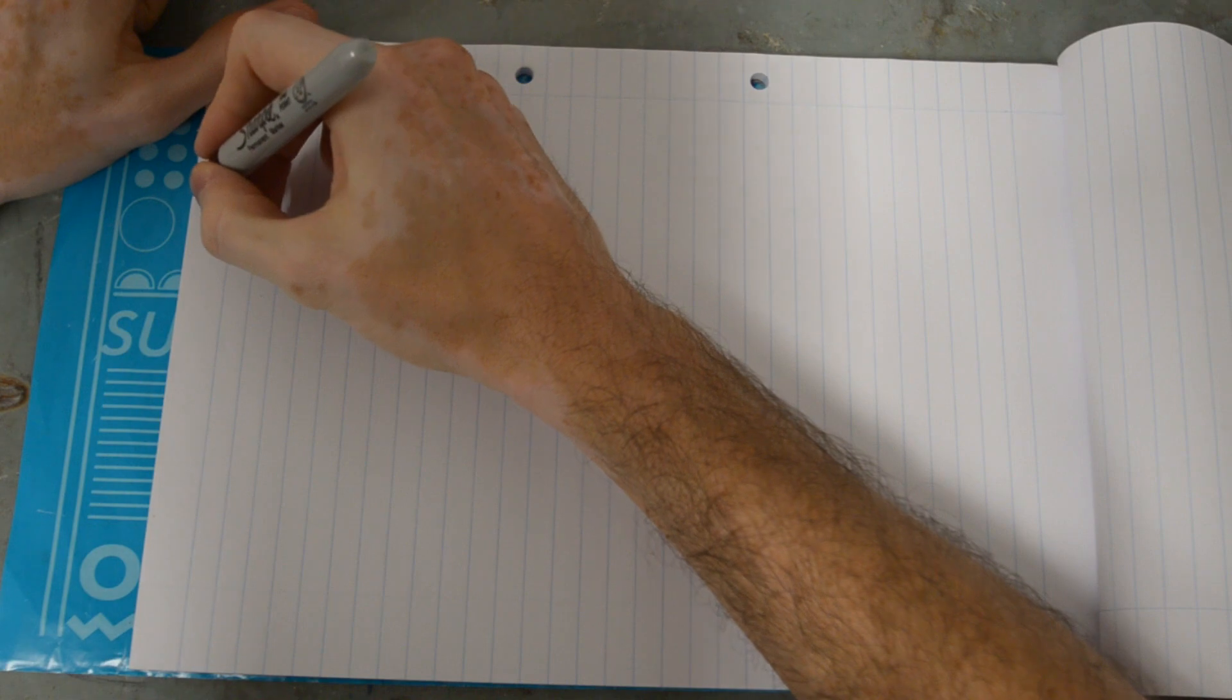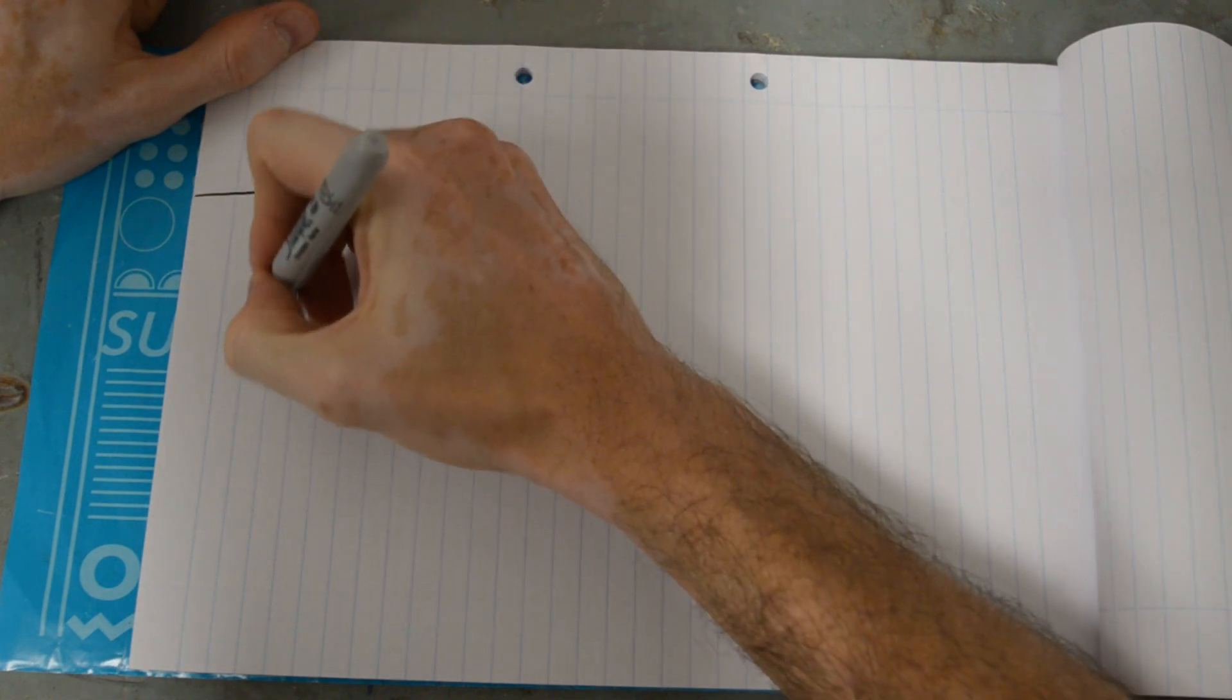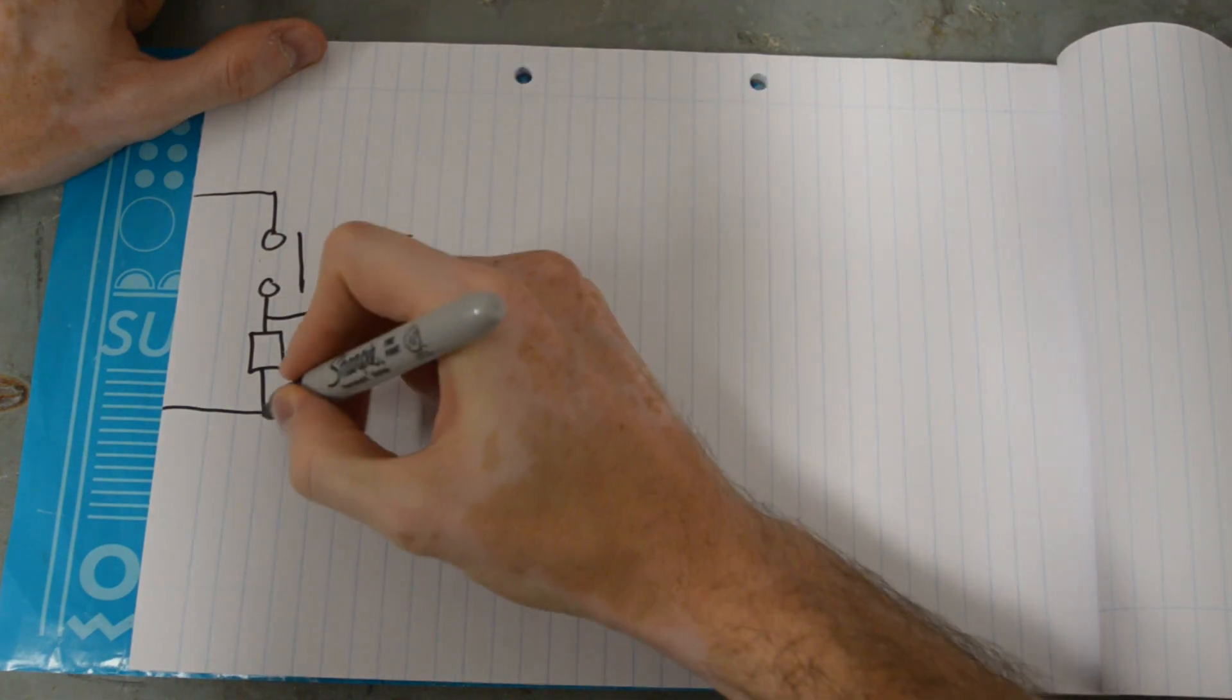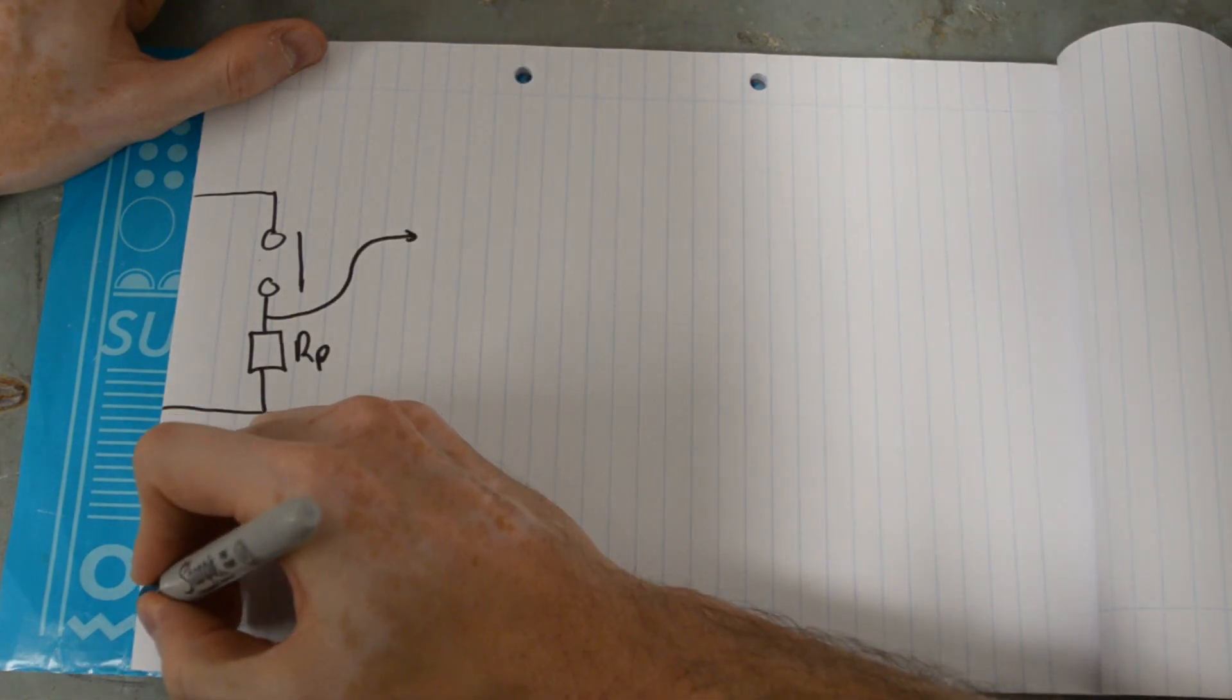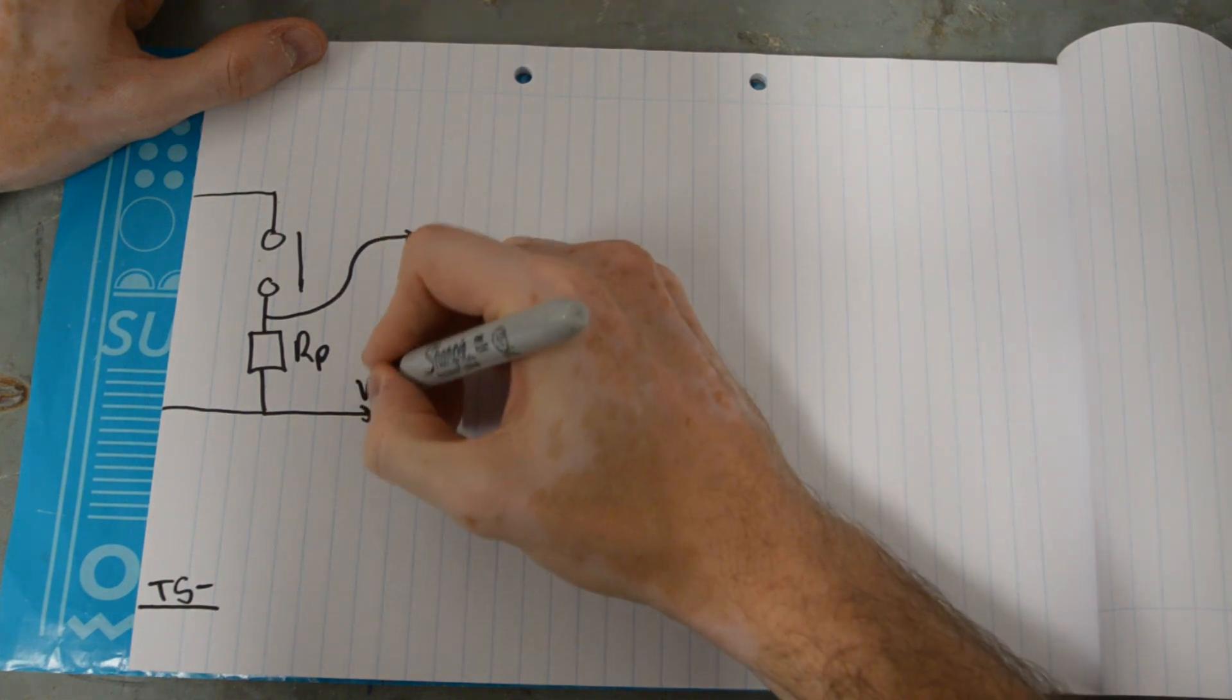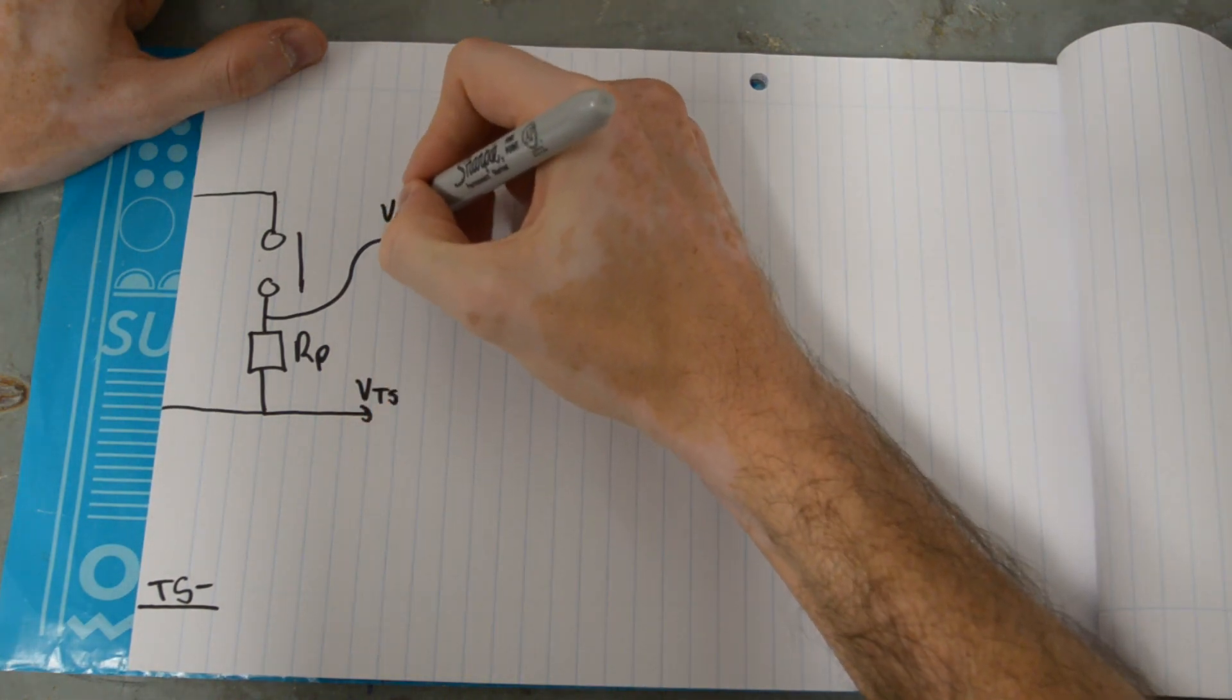So how can we actually implement this? We want to draw the pre-charge circuit just here, but there's the contactor, there's the pre-charge resistor, and we want to measure these two voltages with respect to the tractive system minus. So we want to measure the accumulator side voltage and the tractive system side voltage. That's VTS and that's V accumulator.